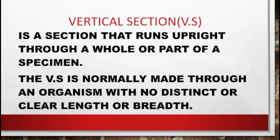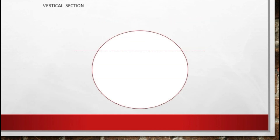The third type is the vertical section. It is a section that runs upright through a whole or part of a specimen, and is normally made through an organism with no distinct or clear length or breadth. It must be noted that the cut section of any organism should be represented by double lines to indicate the thickness of that section when being drawn.